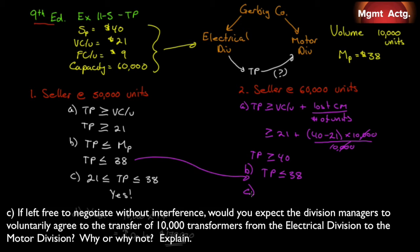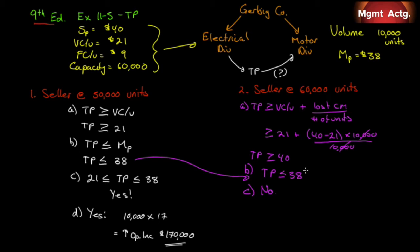Requirement 2C: if left free to negotiate, would you expect the managers to voluntarily agree to the transfer? No. You cannot simultaneously have a transfer price that is both greater than $40 and less than $38. For the electrical division, transferring at even a penny less than $40 is a loss to them. For the motor division, paying anything more than $38 is not in their best interest. Since it's in neither division's best interest, it's not in the company's best interest.